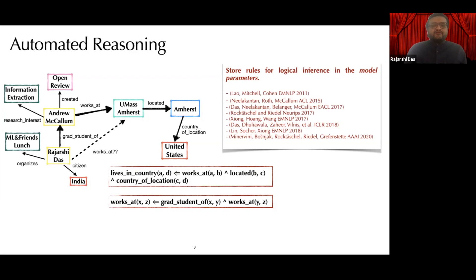There has been an area of work which learns logical inference rules from data and stores them in the model parameters. In this paper, we argue that reasoning can also be very contextual and the reasoning rules required to answer a query can heavily depend on the entities present in the query.